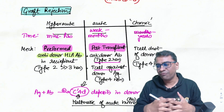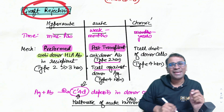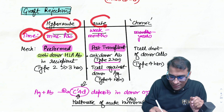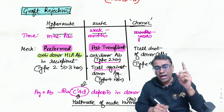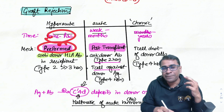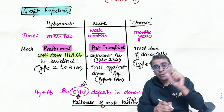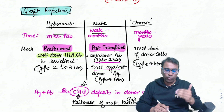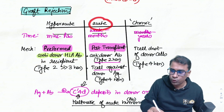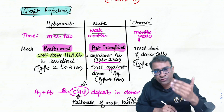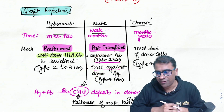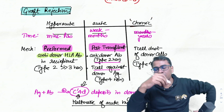Graft rejection is hyperacute, acute, or chronic. Hyperacute occurs within minutes to hours due to preformed anti-donor HLA antibodies in the recipient — it is a type 2 (more than type 3) hypersensitivity reaction. Acute rejection: post-transplant antibody-mediated is type 2, and T-cell mediated is type 4. Chronic rejection is always type 4 hypersensitivity.